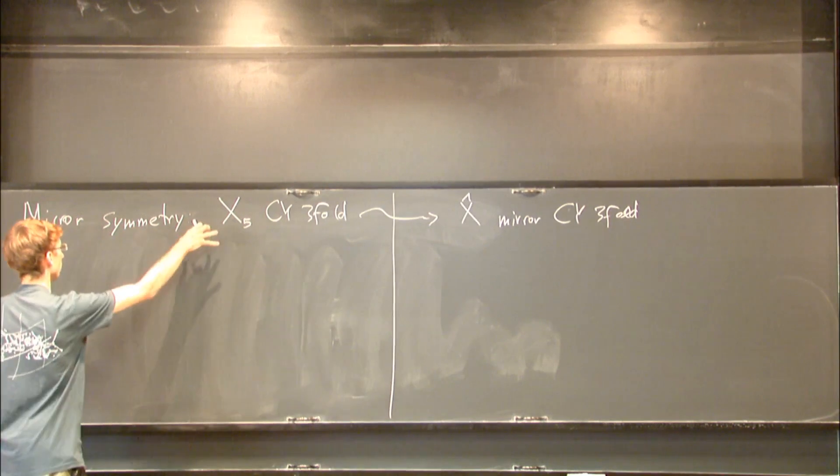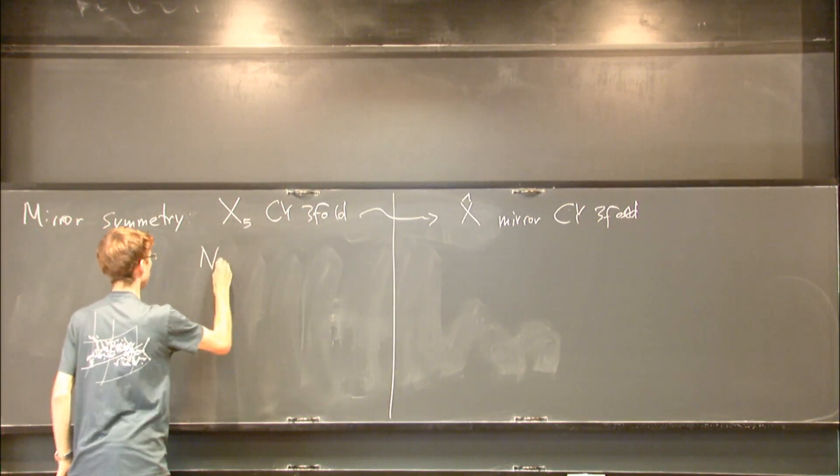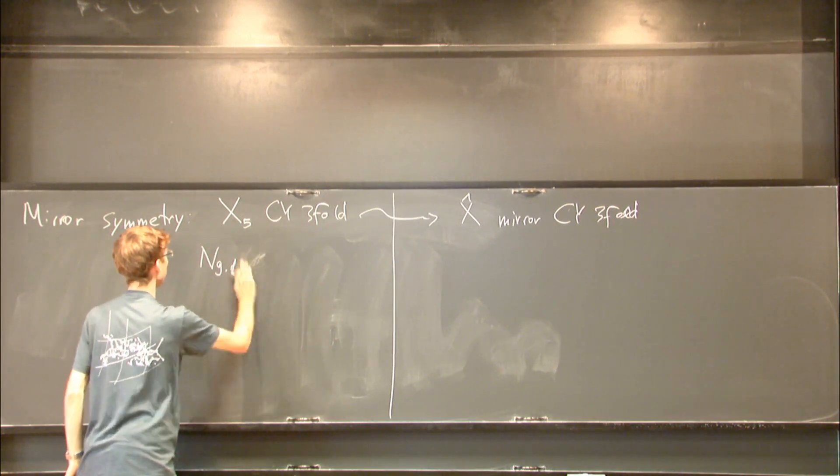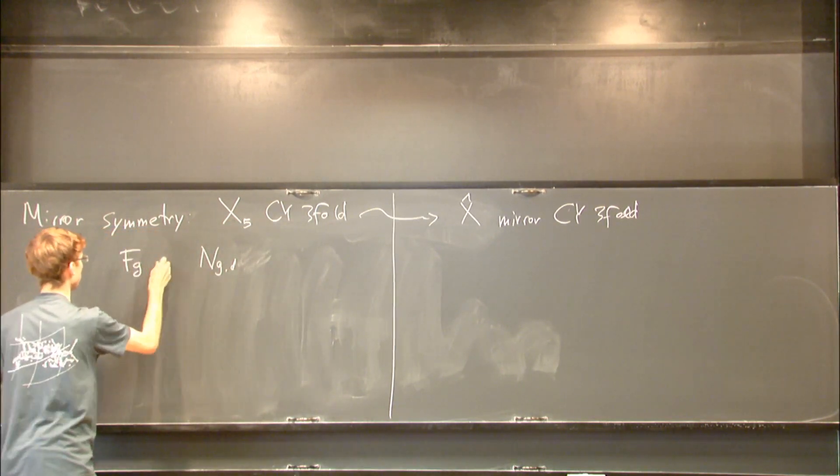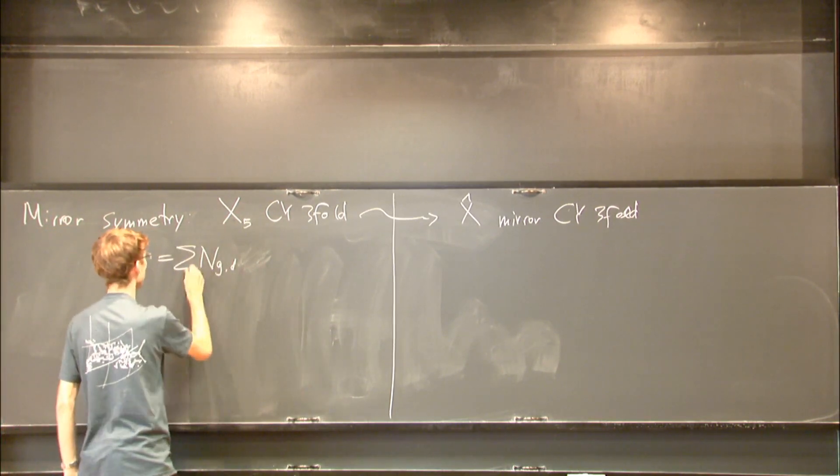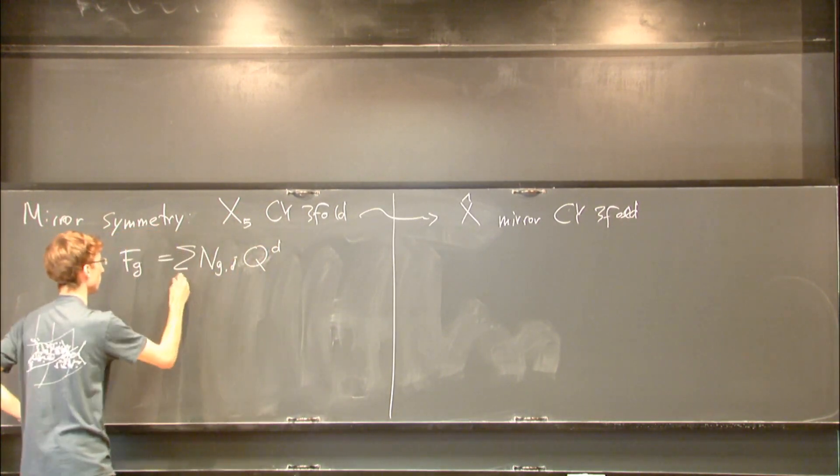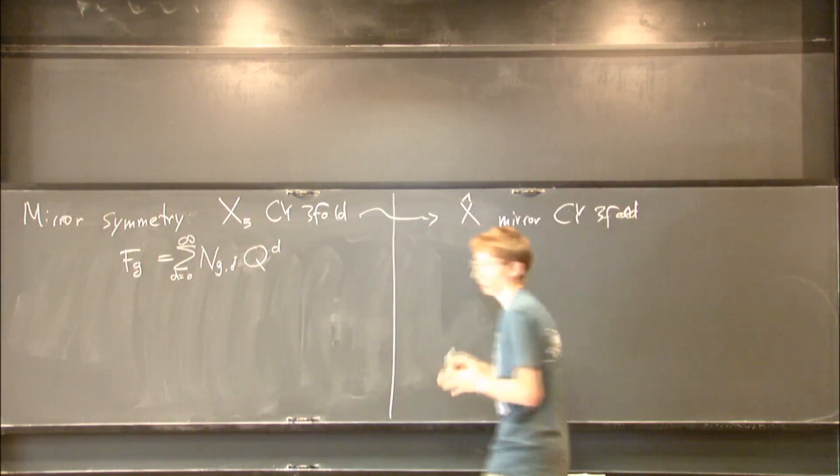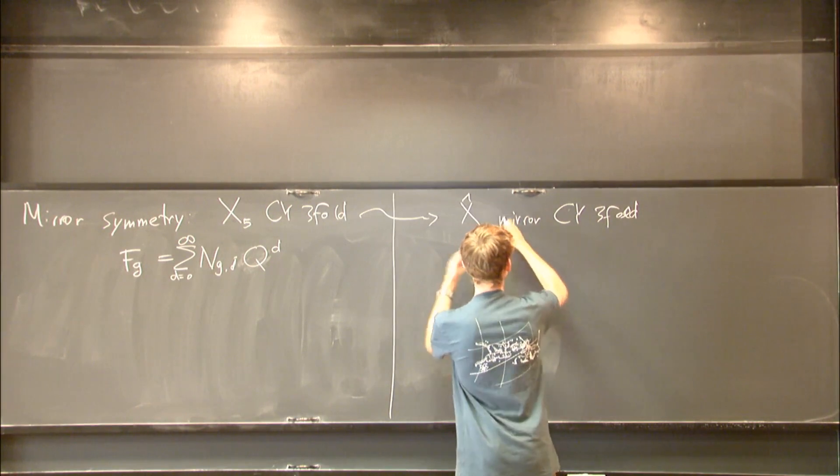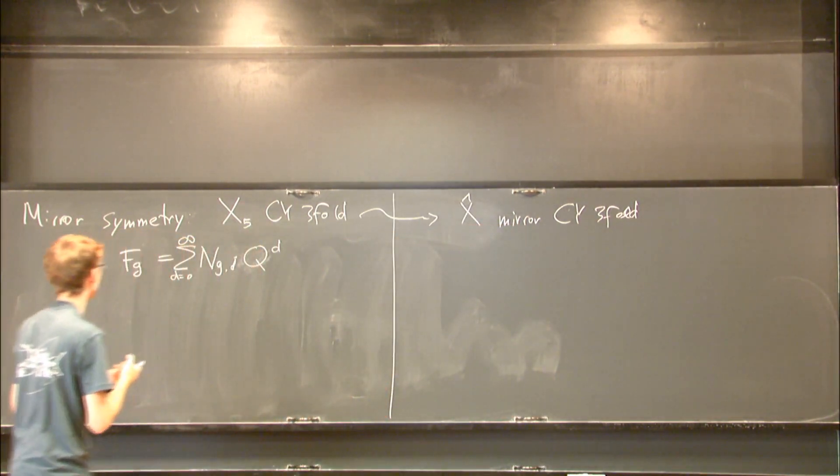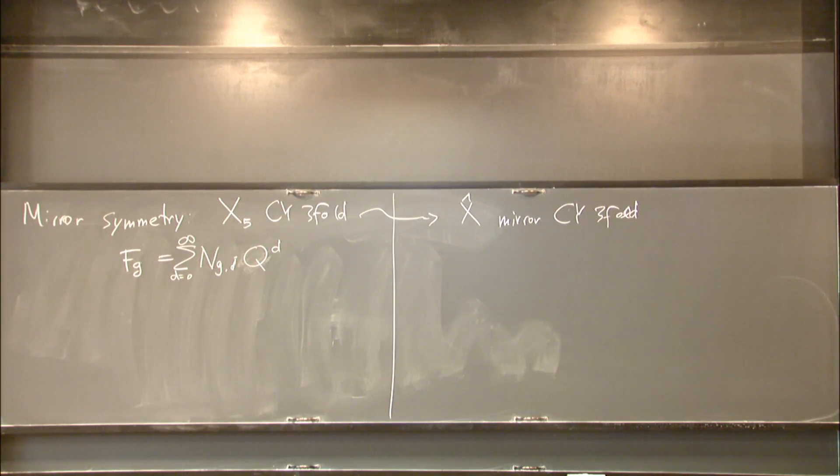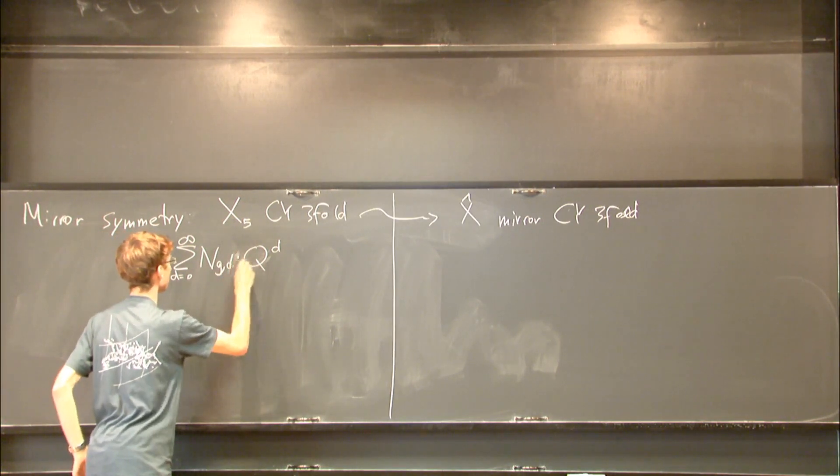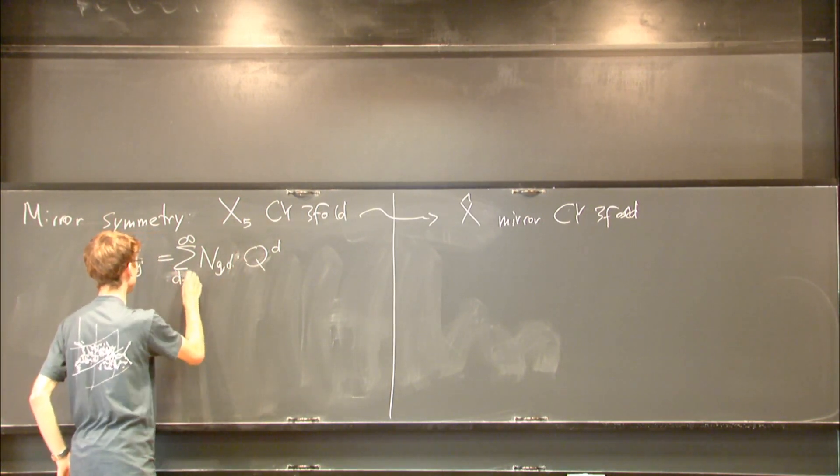For the quintic, we're going to consider all these Gromov-Witten invariants, and it's going to be convenient to put them into a generating series. We collect all Gromov-Witten invariants that have the same genus but varying degree. So we put infinitely many of them into one series - the degree d. The sum is over all degrees, all possible degrees.